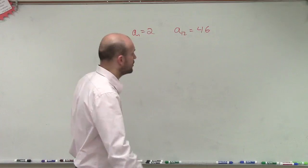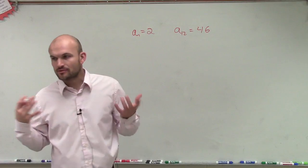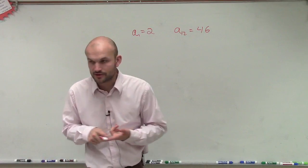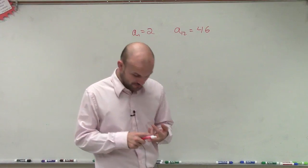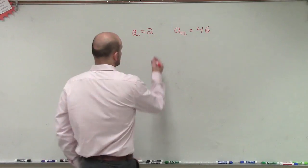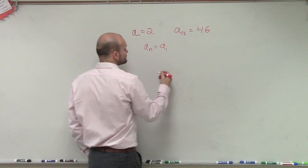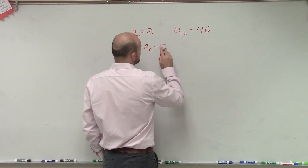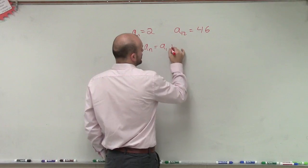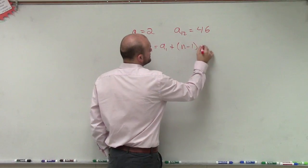Okay, so remember our formula. I gave you guys two formulas: one for the nth term of an arithmetic sequence and one for the sum. The nth term states that aₙ = a₁ + (n - 1)d.